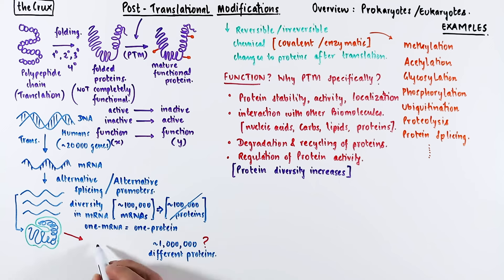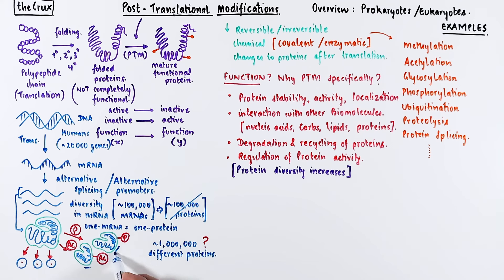This is possible because each protein can undergo a certain type of post-translational modification, like phosphorylation or acetylation. Depending on these modifications, it can have a different activity and function. Now you see that a single mRNA has the potential to give rise to multiple functional proteins.